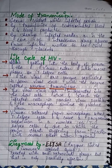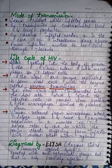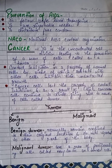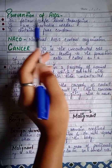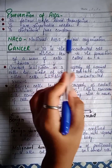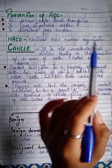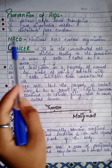The full form of ELISA is Enzyme-Linked Immunosorbent Assay. Prevention of AIDS includes following safe blood transfusion practices, using disposable needles, distributing free condoms, and the work of NACO — National AIDS Control Organization.